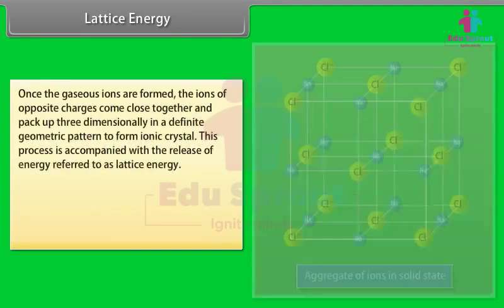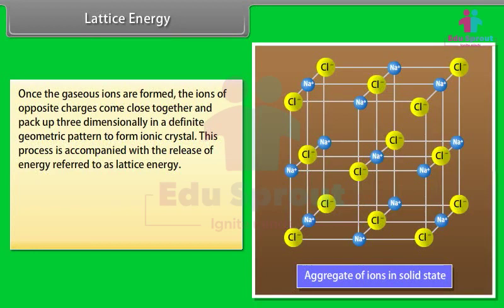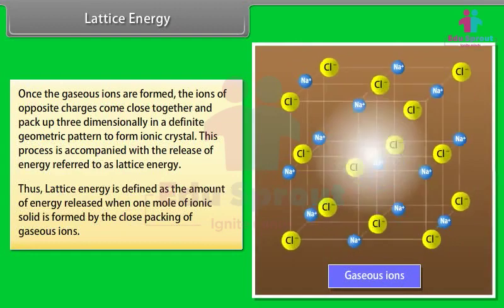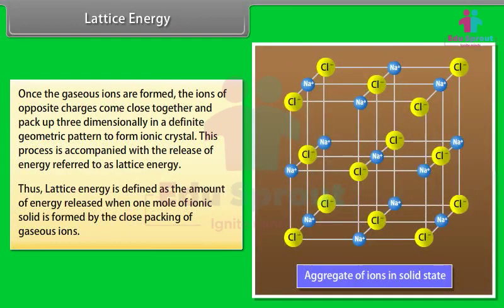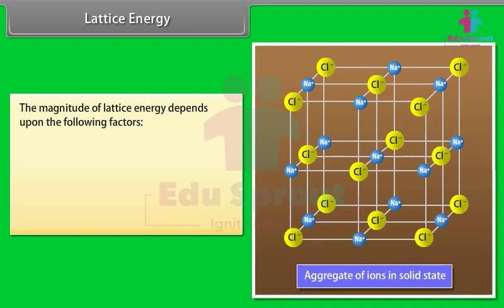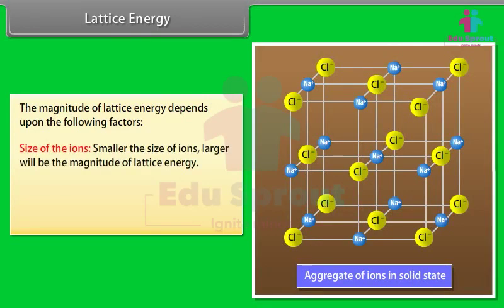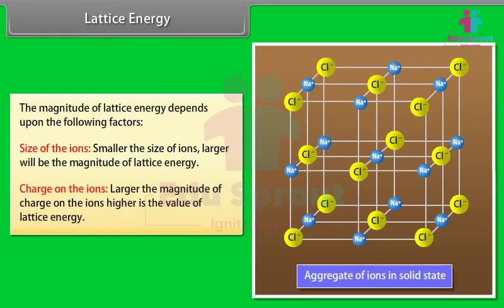Once the gaseous ions are formed, ions of opposite charges come close together and pack three-dimensionally in a definite geometric pattern to form an ionic crystal. The energy released in this process is called lattice energy, defined as the amount of energy released when one mole of ionic solid is formed by the close packing of gaseous ions. The magnitude of lattice energy depends on: size of the ions — smaller the ions, greater the interionic attraction and larger the lattice energy; and charge on the ions — larger the charge, greater the attractive force and higher the lattice energy.